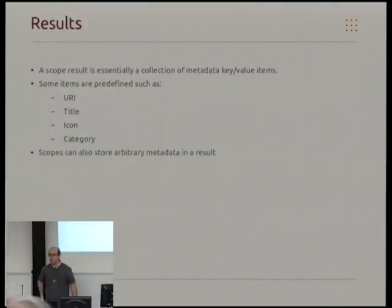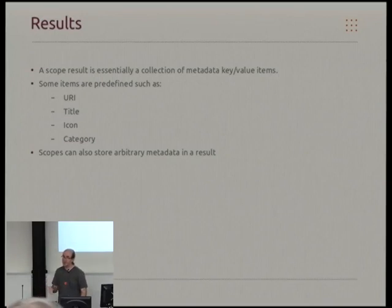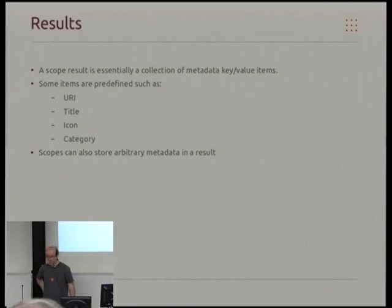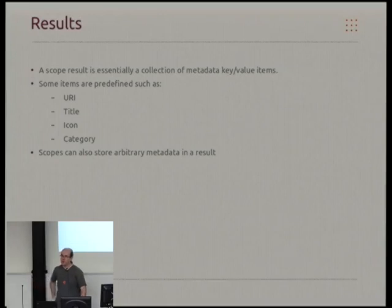The result items which you get in Unity are basically a collection — a dictionary of metadata. The very minimal amount of information you've got is a URI used to identify the result, a title and an icon, and which category it fits in. As well as some predefined values, we've also allowed you to store arbitrary metadata, which is used for some other features.